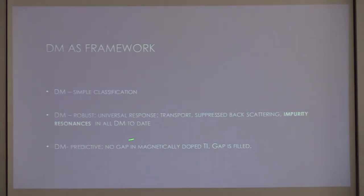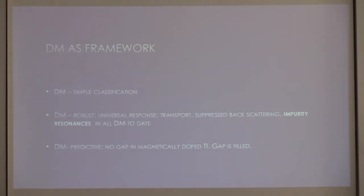The consequence of this — and this is where I'm going — is that if Dirac materials as a class holds up, and if there are common features in the response to defects, then magnetically doped topological insulators should not have a gap. I know this is a strong statement, so stay with me and then we can discuss what I'm saying is wrong or right.